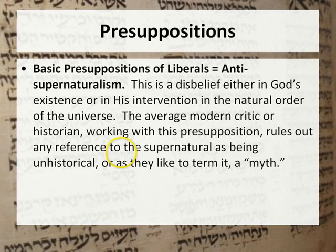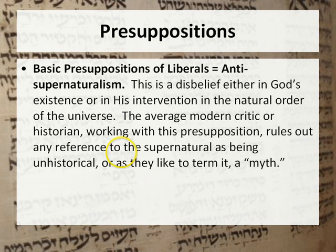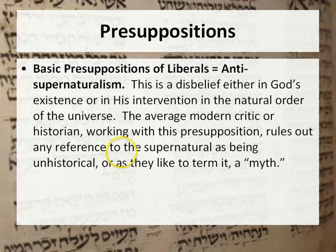It's not the case that our inability to verify supernatural causes in a Cartesian kind of certainty disqualifies them from existing. But this is the presupposition: the disbelief either in God's existence or in his intervention in the natural order. The average modern critic working with this presupposition rules out any reference to the supernatural as unhistorical, or as they prefer to term it, myth. So Genesis 1 is myth — a God speaking things into existence must be myth. Every miracle in Scripture becomes myth. In New Testament studies, Bultmann, a German New Testament scholar, demythologized the Gospel, wanting to get rid of all supernatural elements to find the historical kernels, and wound up mangling the Gospel and finding nothing.